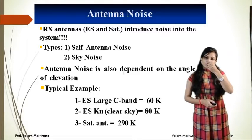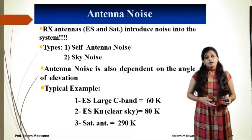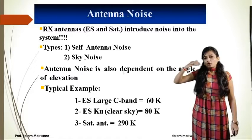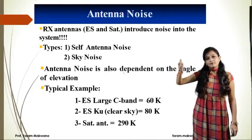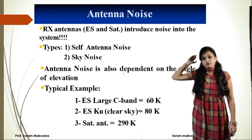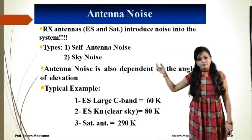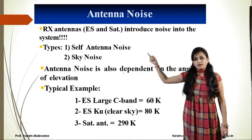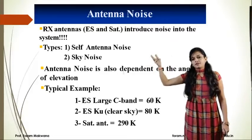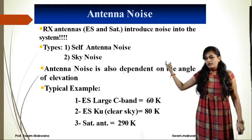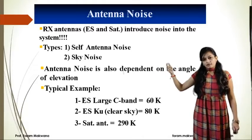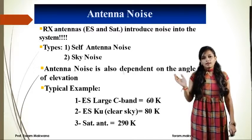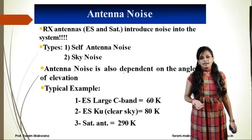As we are going to start antenna noise, a transmitter antenna will also introduce noise, and a receiver antenna will also introduce noise in the system. There are two different types: first, the antenna itself introduces noise, and second is the sky noise. These two noise sources we need to consider when calculating the link budget of downlink, uplink, or the combined uplink and downlink.